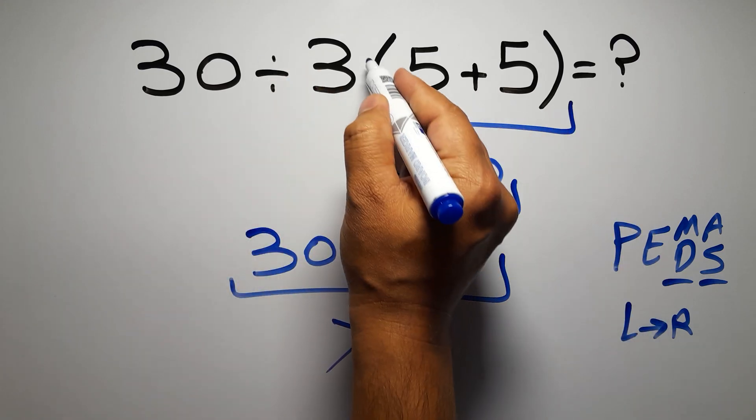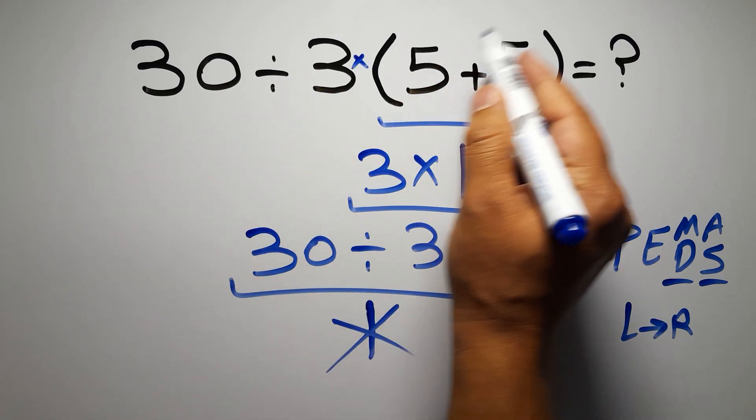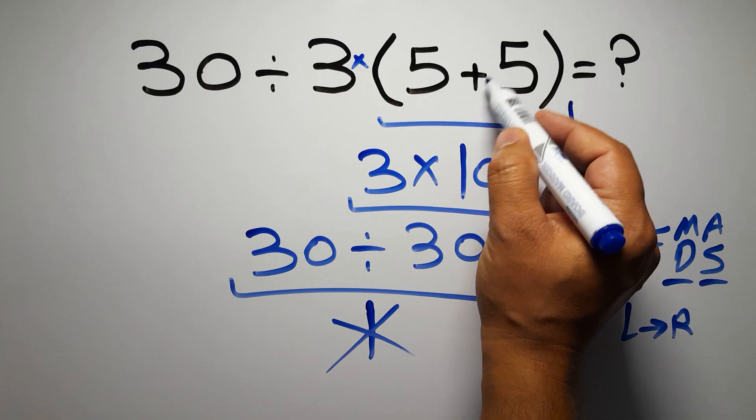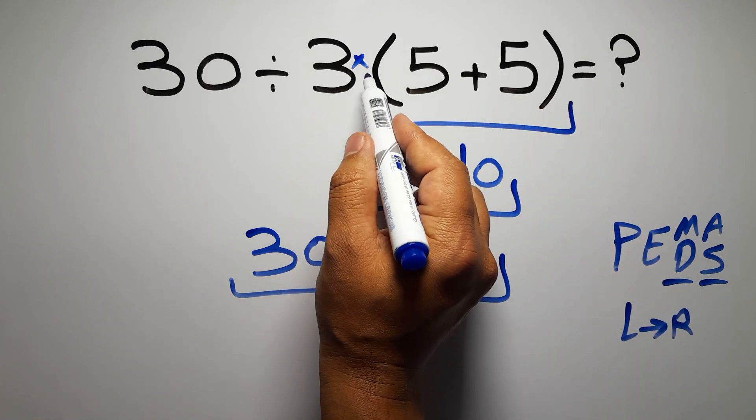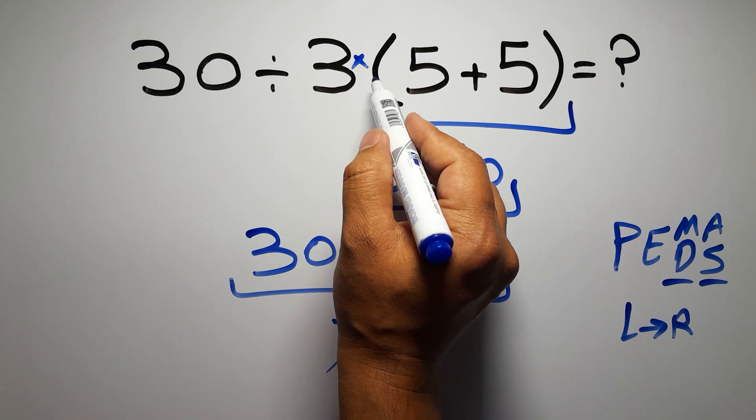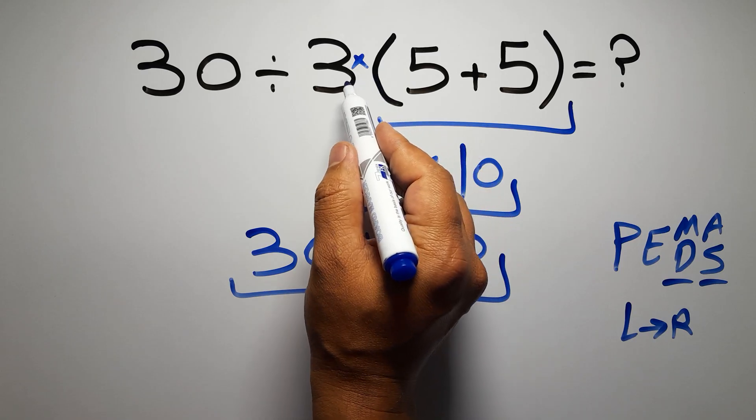In this expression we have one division, one multiplication, and one parentheses. Inside this parentheses we have one addition. Here we have a multiplication because in mathematics when a number is placed next to parentheses it means multiplication, and we usually don't write the multiplication sign for brevity.